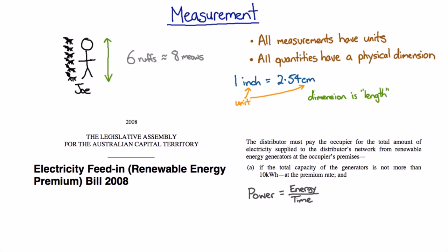Kilowatt hours does come up in electricity bills quite a lot. If we just rearrange this equation, we can see that if we multiply both sides by time, then the energy you get is just the power times the time. And just as kilowatt is a reasonable unit for power coming off a roof and hour is a reasonable unit of time,